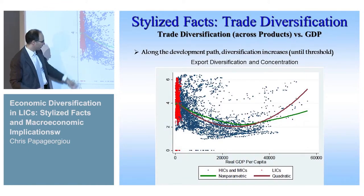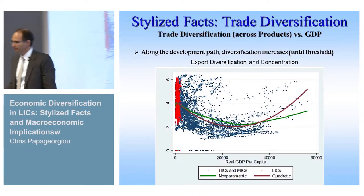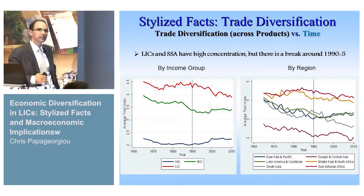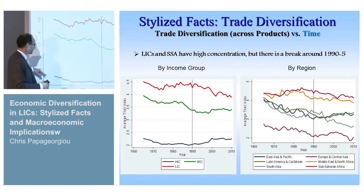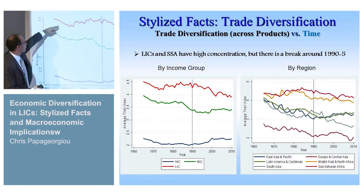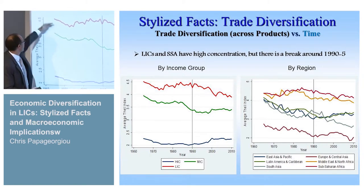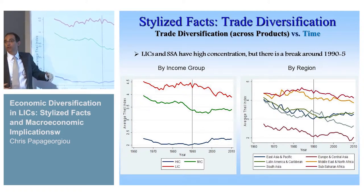As you can see, low-income countries are very much to the left, indicating lower development, but also notice the huge variability, which is of course very interesting to explain. Looking at the time series dimension, on the left panel we have diversification indices across time by income group: red is low-income countries, green is middle-income, and blue is high-income. A higher index means lower diversification.